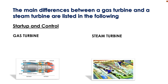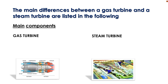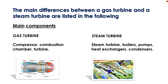Start-up and control: Gas turbine start-up is easy and quick. Steam turbine start-up is difficult and time-consuming. Main components: Gas turbine consists of a compressor, combustion chamber, and turbine. Steam turbine system consists of a steam turbine, boilers, pumps, heat exchangers, and condensers.